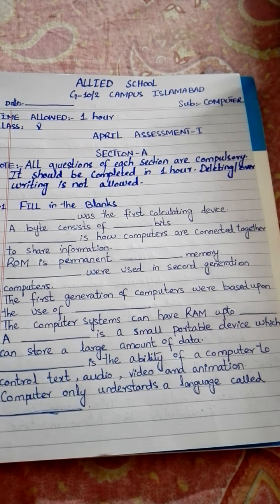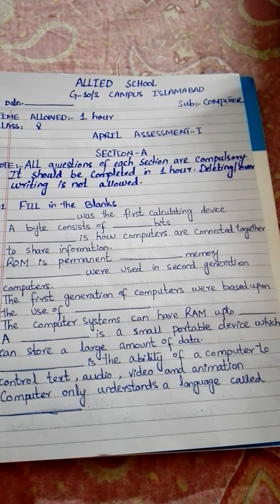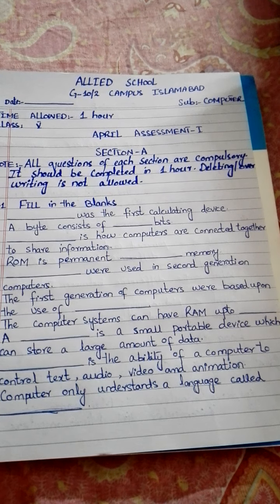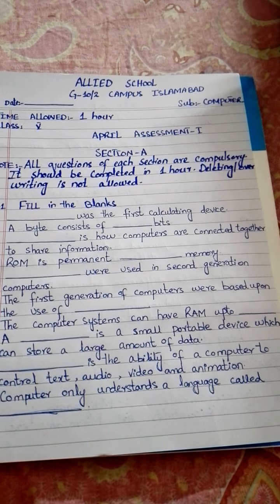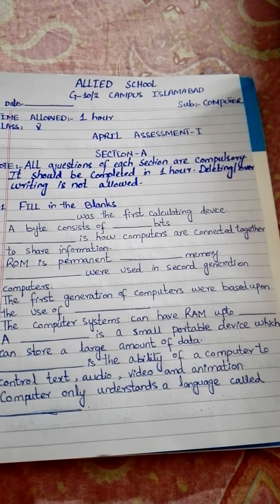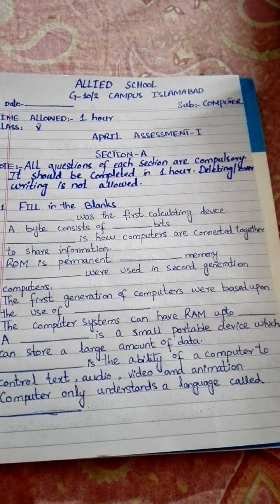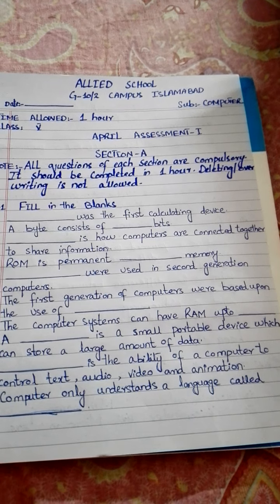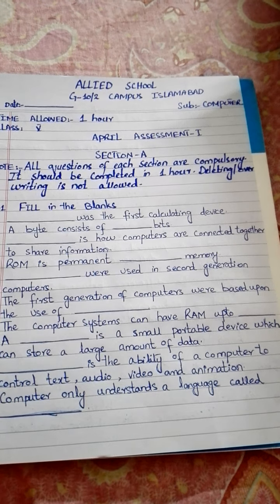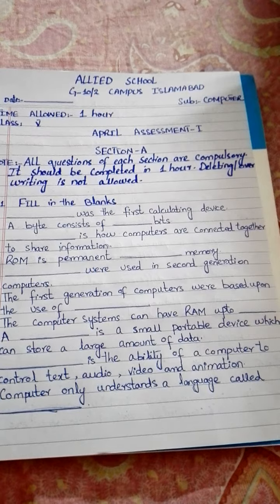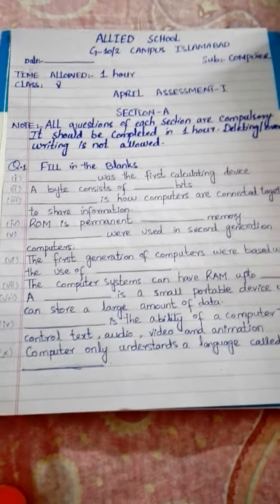No. 8 (continued): Dash is the ability of a computer to control text, audio, video and animation. No. 10: The computer only understands a language called dash. Computer jo hai wo kis language ko understand karta hai — uska name aapne write karna hai.